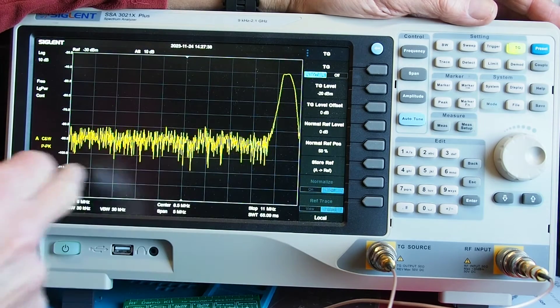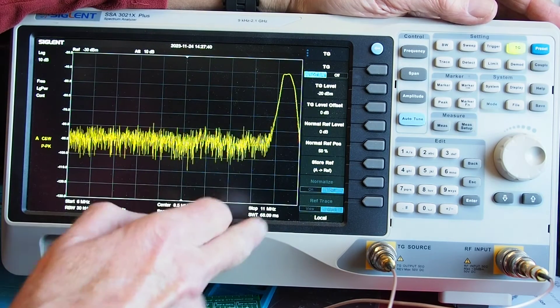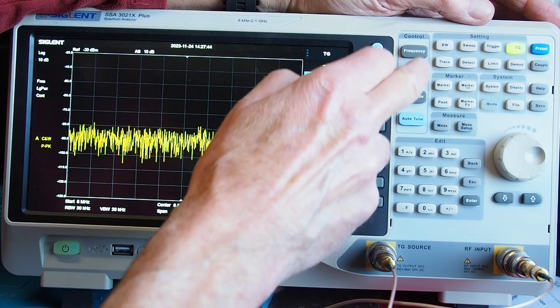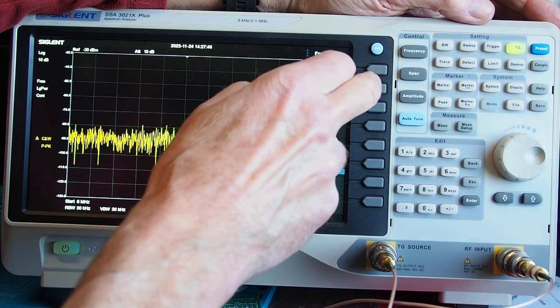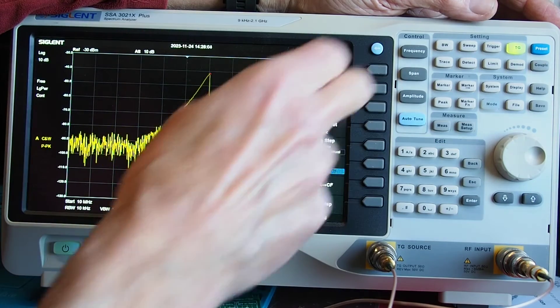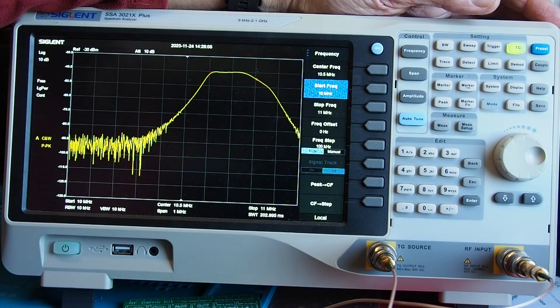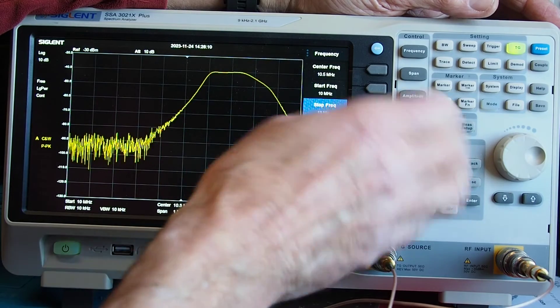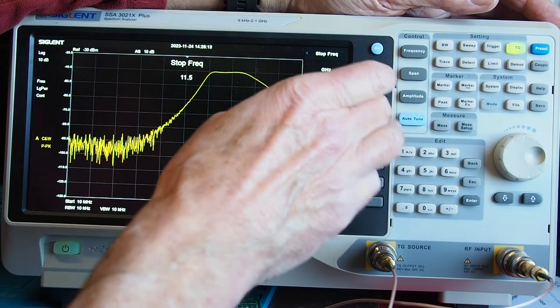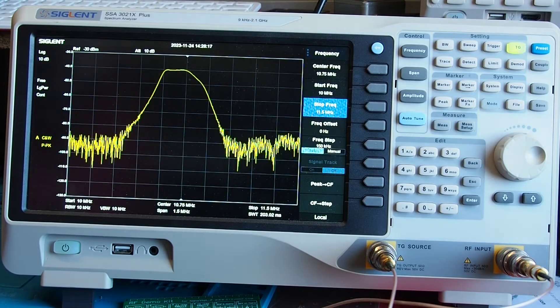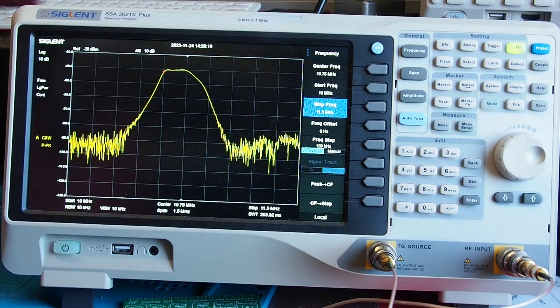Right one of the problems here is I thought I'd set the start to a little bit higher but I hadn't so I'm going to change on frequency I'm going to change start frequency to 10 megahertz. There you go that's hopefully a little bit better and we'll make the stop frequency 11.5 megahertz so we can hopefully now see the shape of the filter.